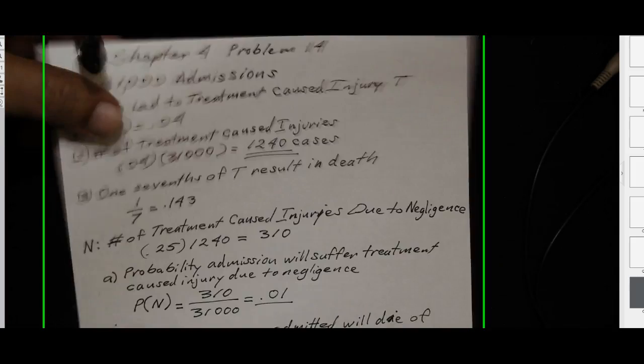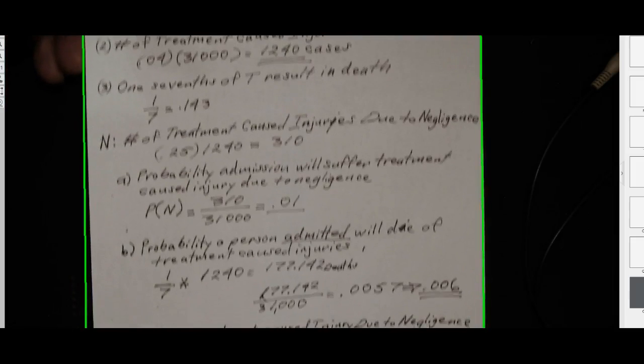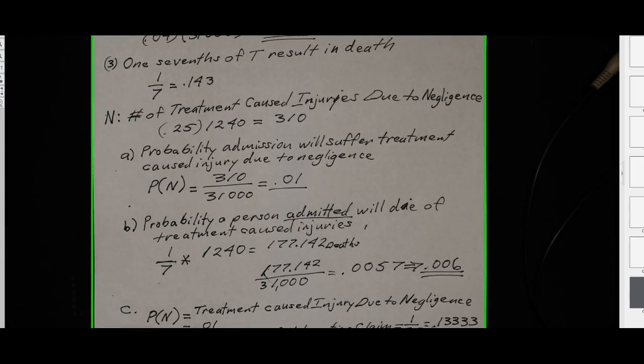The next question they ask is what's the probability that a person admitted will die, or a person with a treatment caused injury will die? They gave us the one-seventh times the 1,240, that results in 177.142 deaths. Dividing that by the 31,000 gives me 0.006 to three decimal places.